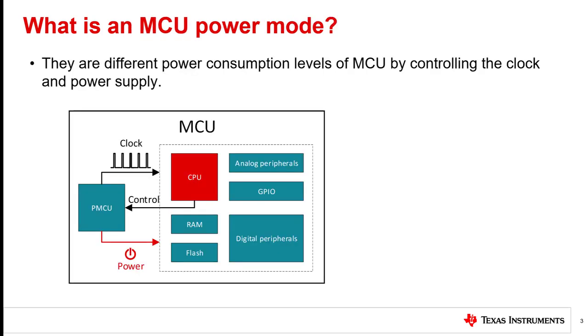In an MCU, the current power mode is controlled through the clock and power supply to the peripherals, CPU, RAM, and Flash, by a Power Management and Clock Unit, or PMCU, shown in the picture on the left. The PMCU is controlled by the CPU. In some MCUs, a PMCU may be divided into separate parts, but normally the functions we are going to discuss will all be present in some form.